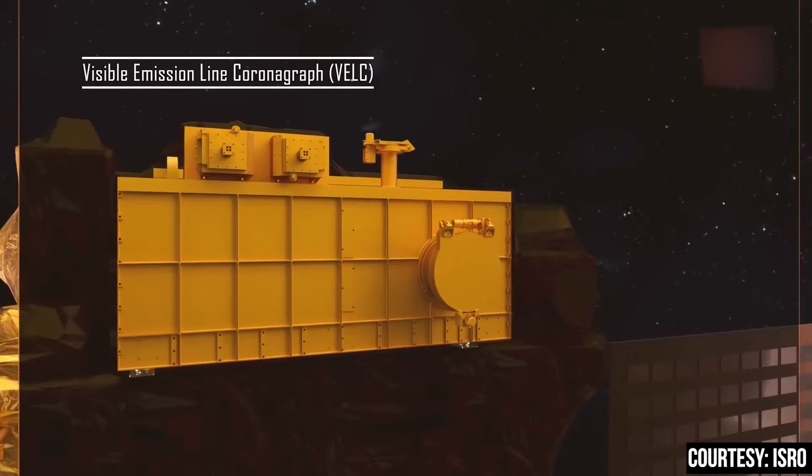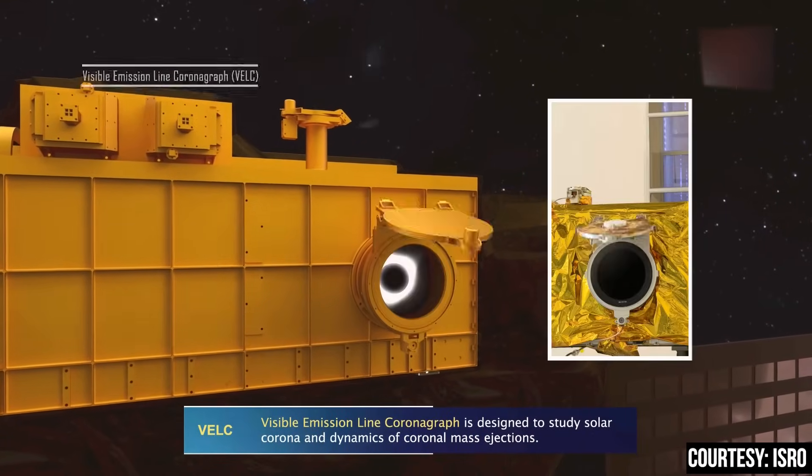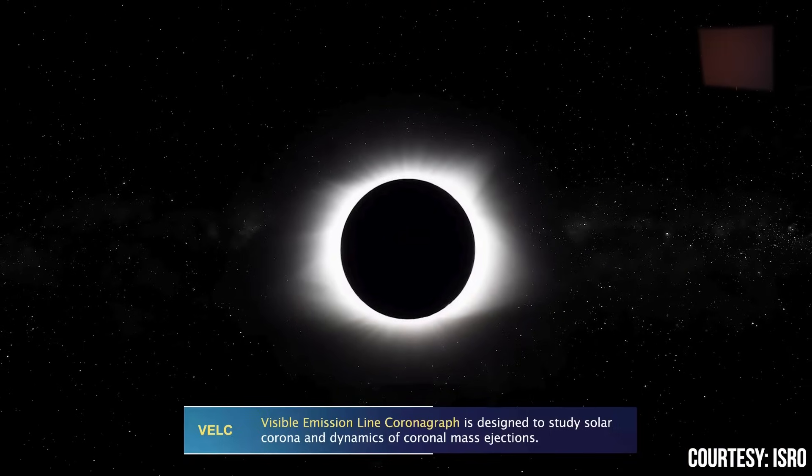First one is the visible emission line coronagraph, short form VELC. This instrument is dedicated to studying the corona layer and measuring coronal mass ejections.